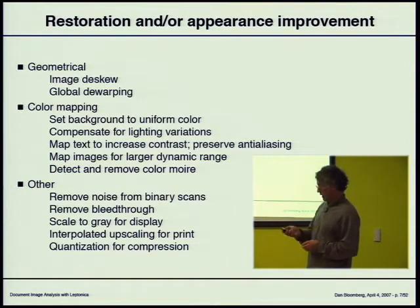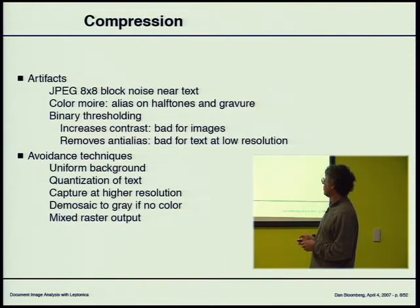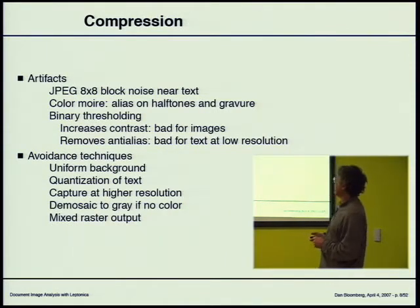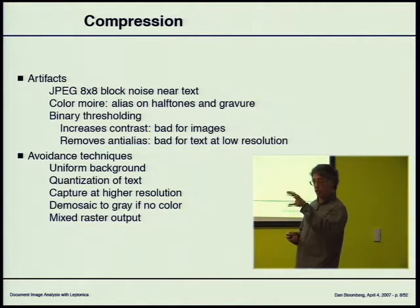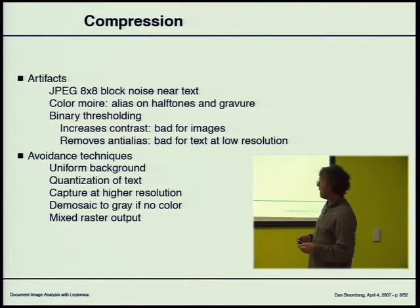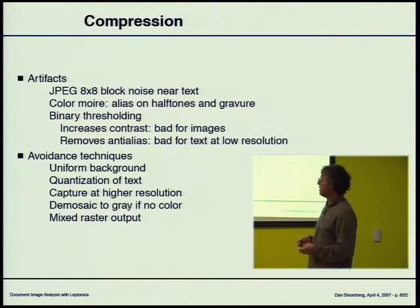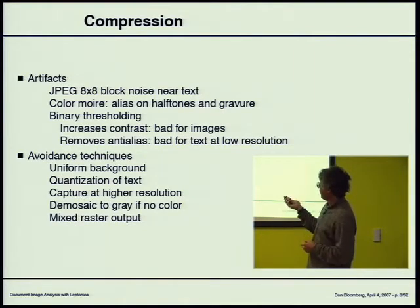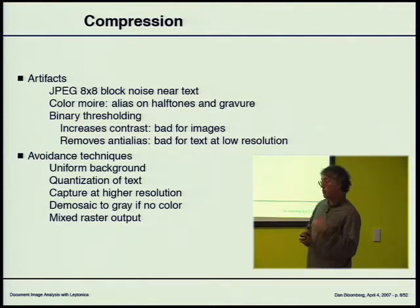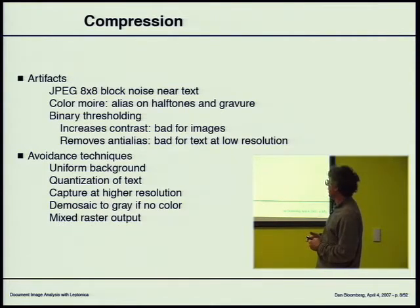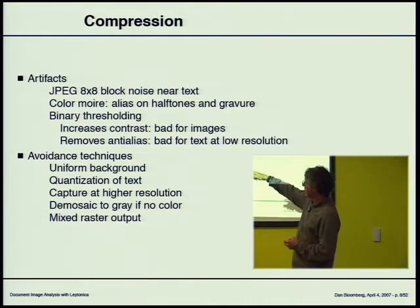For binary scans you may want to remove noise and bleed-through. If you're displaying a binary image it's useful to scale it down into a gray image so it looks good on a grayscale display. For printing a gray input, you typically want to scale it up preserving gray information around character edges. JPEG artifacts — the 8x8 block artifacts around text — are also a problem, as is moiré on halftones. Binary thresholding can destroy images.